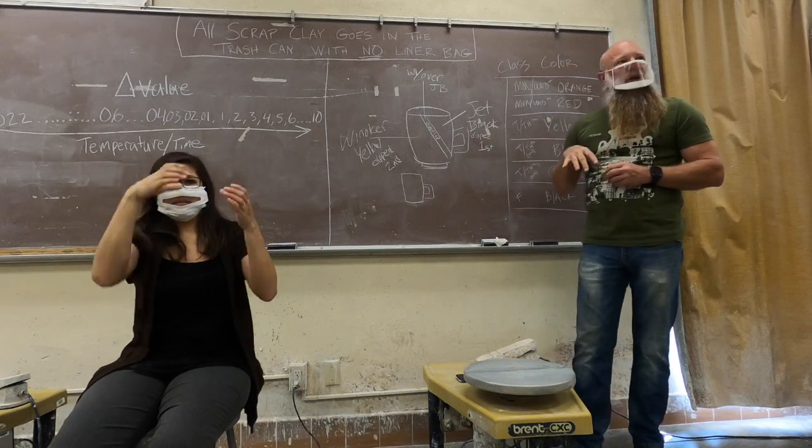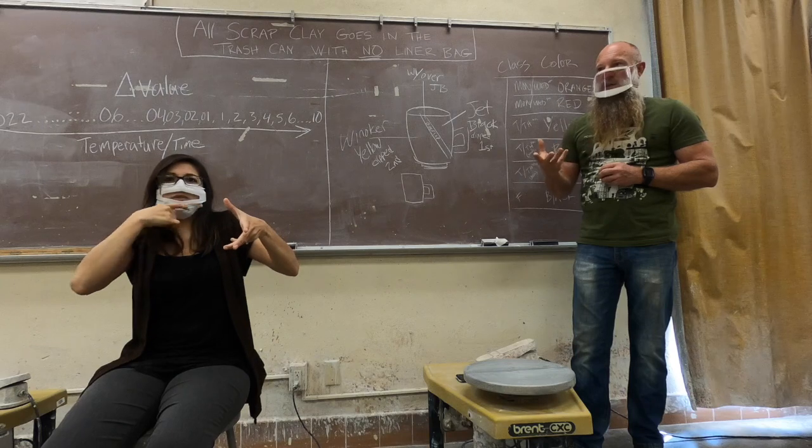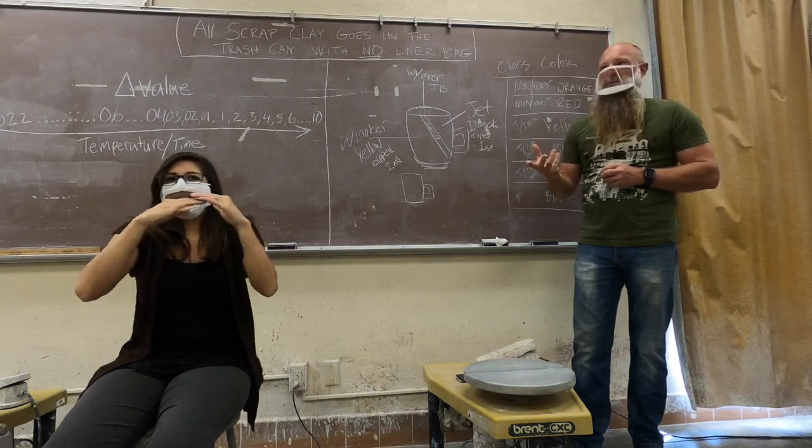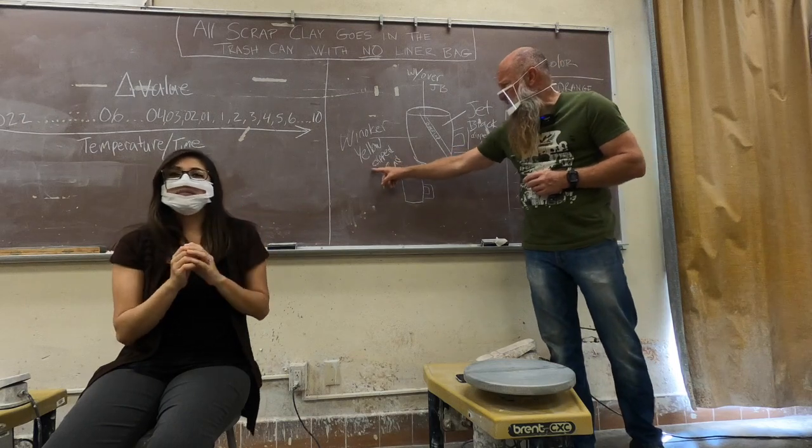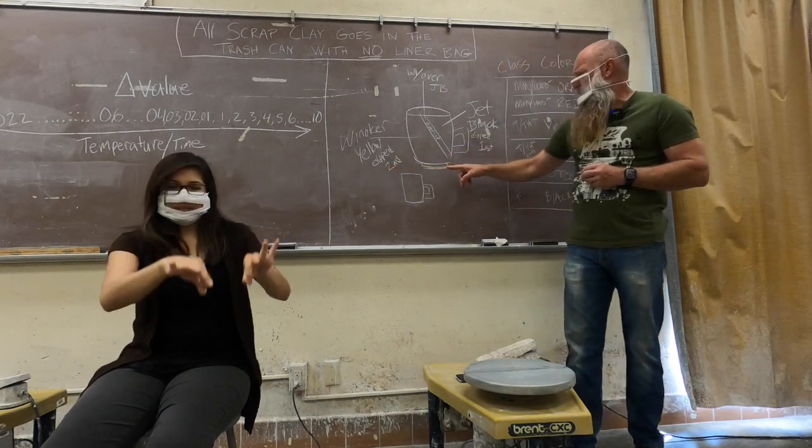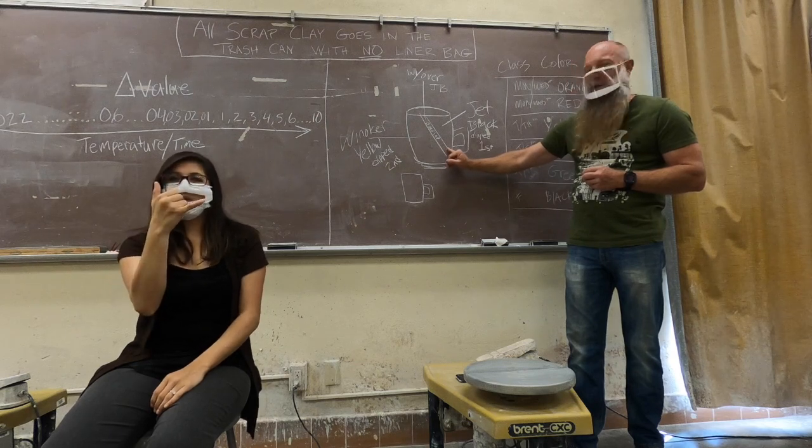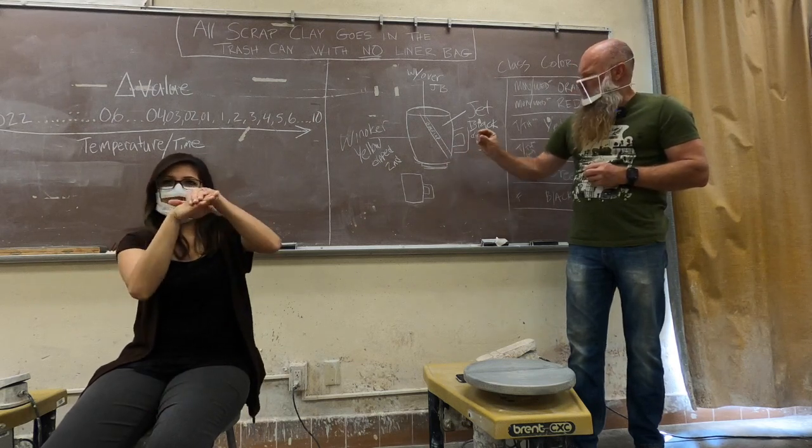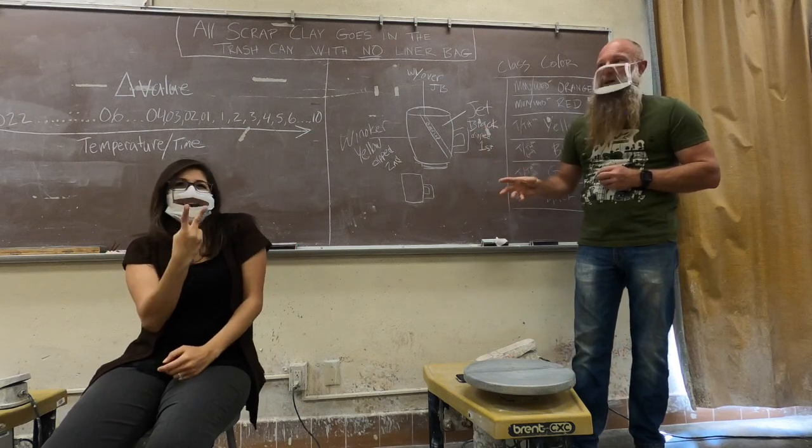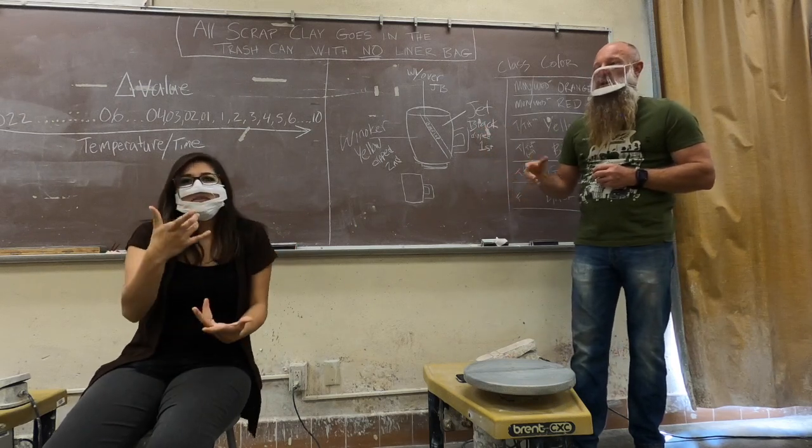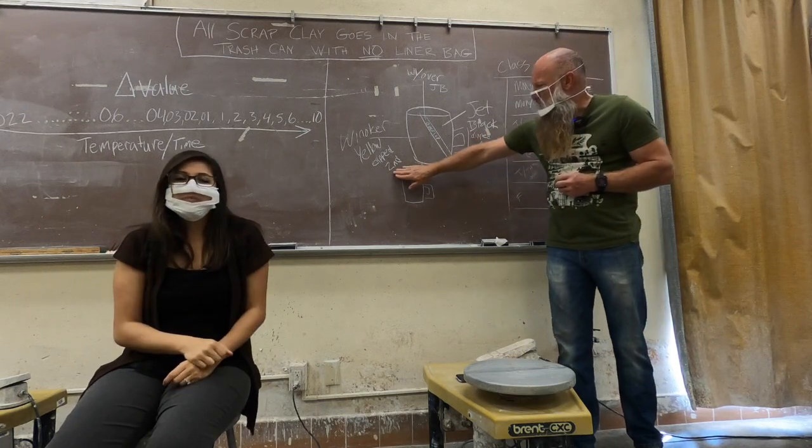Then I let it dry, which is very quick. It dries in less than a minute. It's dry, okay? And you're able to touch it. And then what I did is I dipped it into the Winokur Yellow, okay? And when I dipped it into the Winokur Yellow, I overlapped the Jet Black with the Winokur Yellow. I probably did it about a half an inch, right? It doesn't have to be a half an inch. It could be a quarter of an inch if you want. It could be more than that if you want, right? That's the second one that I dipped.